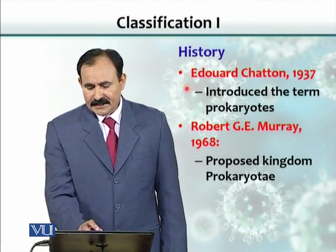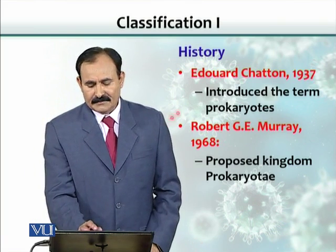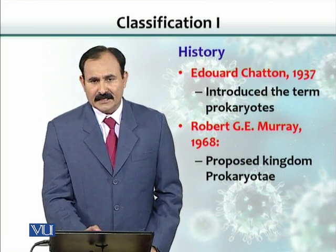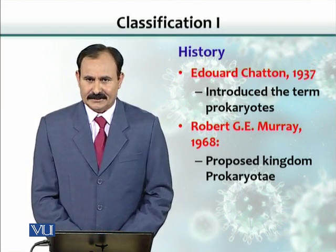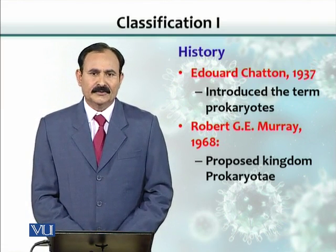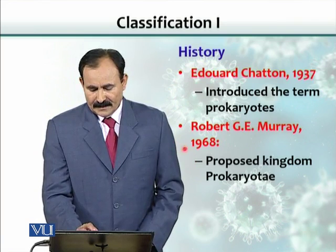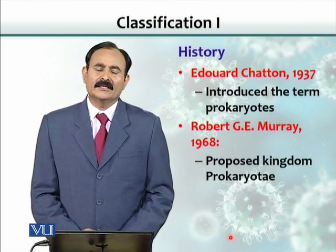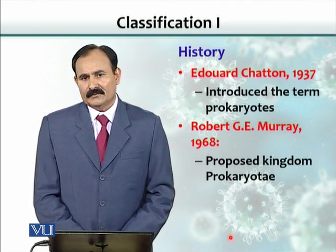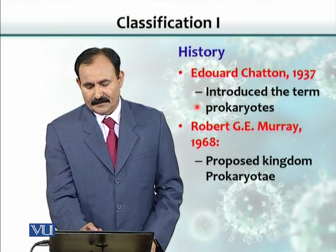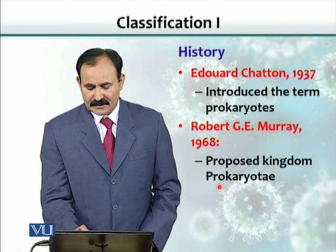Edward Chetton, in 1937, introduced another term for microbes — he called them prokaryotes. Prokaryotes are microorganisms that do not have a well-established nucleus; they do not have a nuclear membrane around their nuclear material. Then Robert Murray, in 1968, proposed that all these microorganisms without a well-established nucleus should be placed in a different kingdom, and he proposed the name prokaryote for that kingdom.